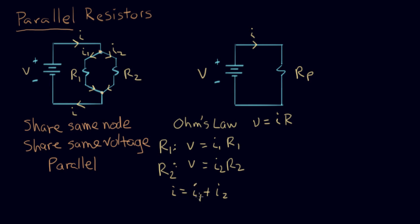What I'm gonna do now is come up with an expression for I1 and I2 based on these expressions and plug them into this equation. I can rewrite this equation as I1 equals V over R1. I can write this one as I2 equals V over R2. And now I'm gonna plug these two into here. Let's do that. I equals V over R1 plus V over R2.